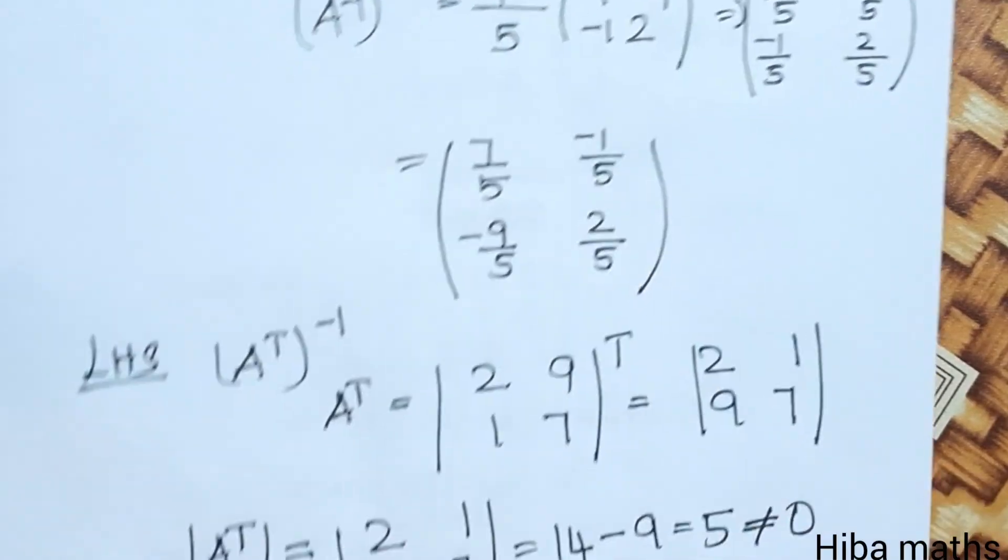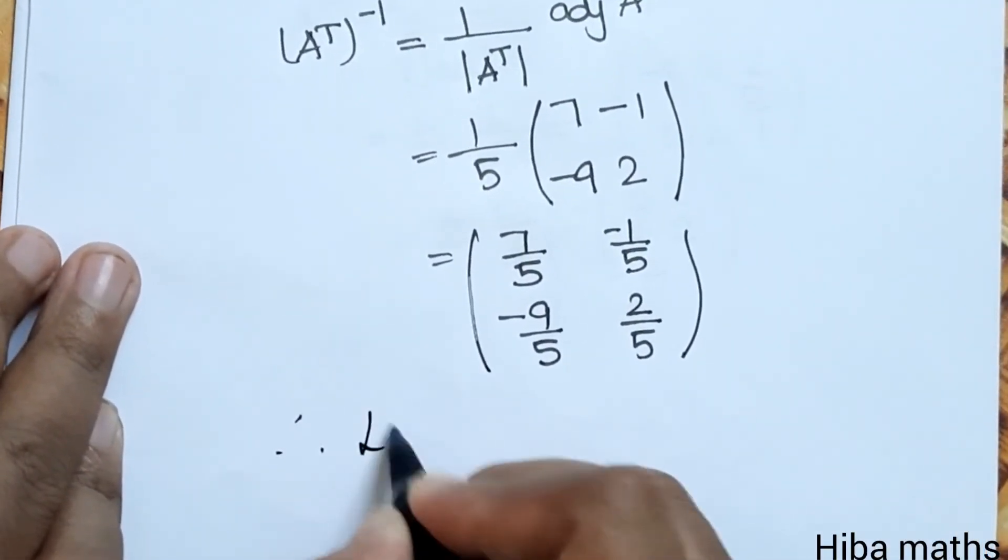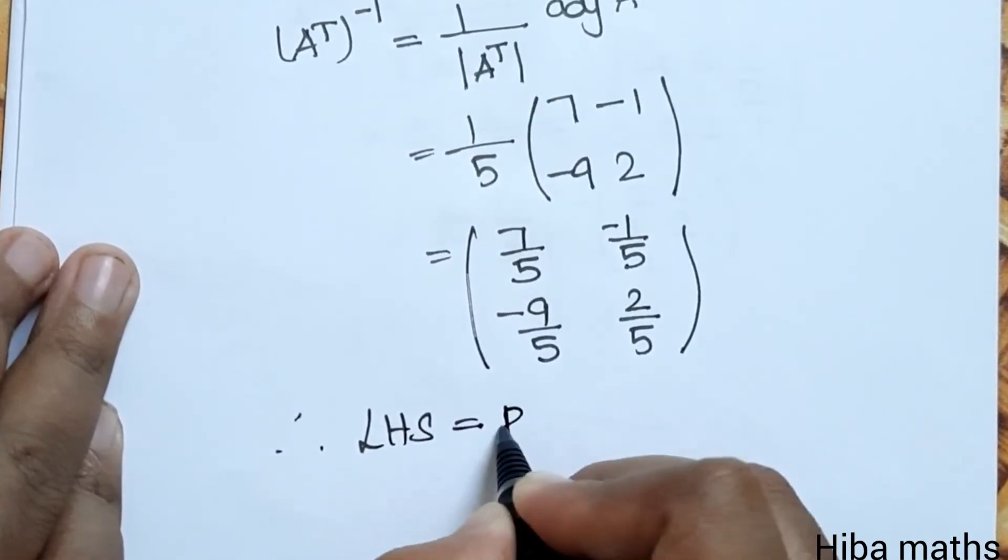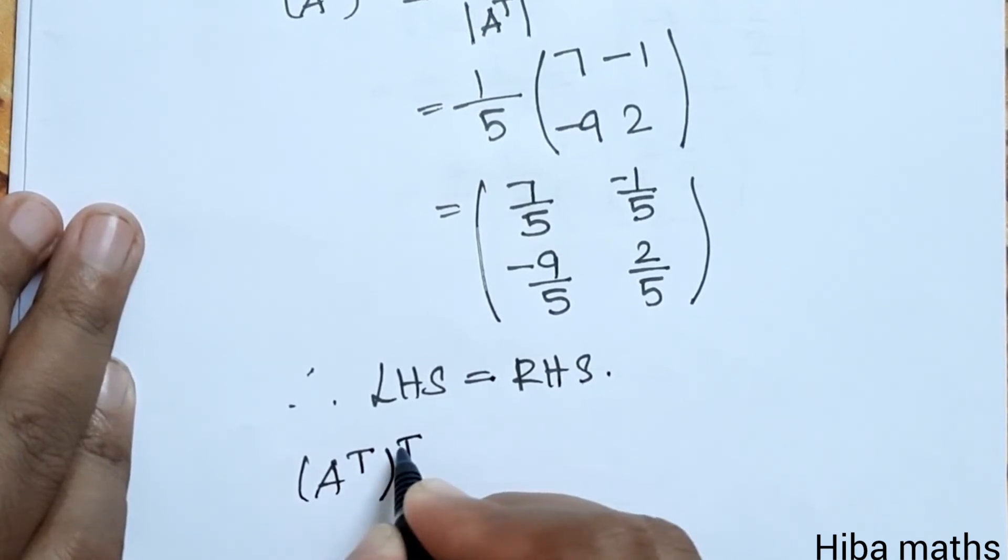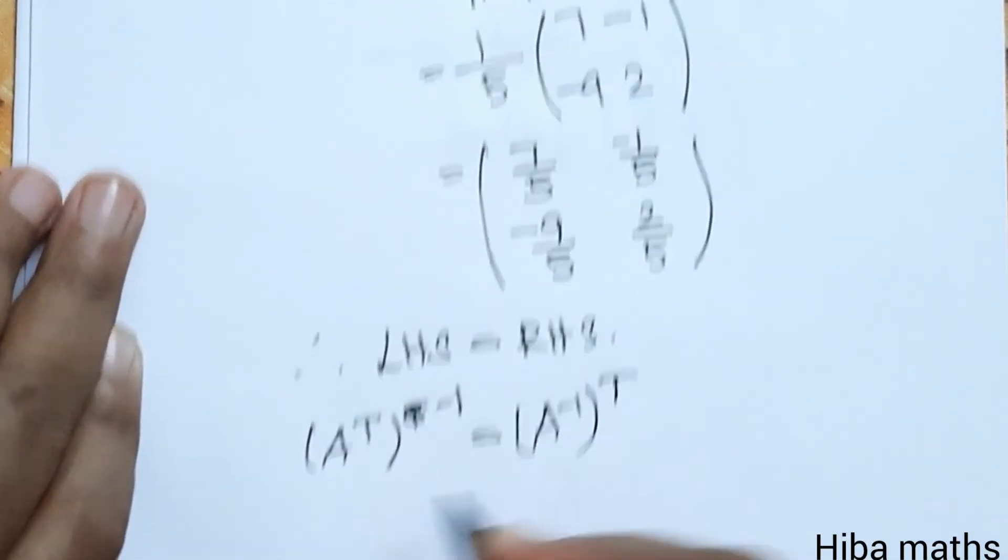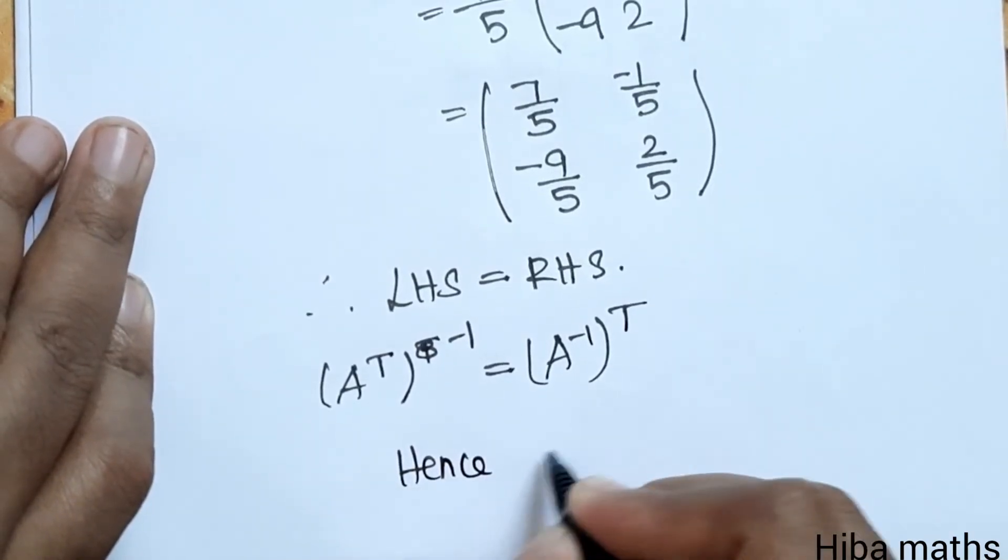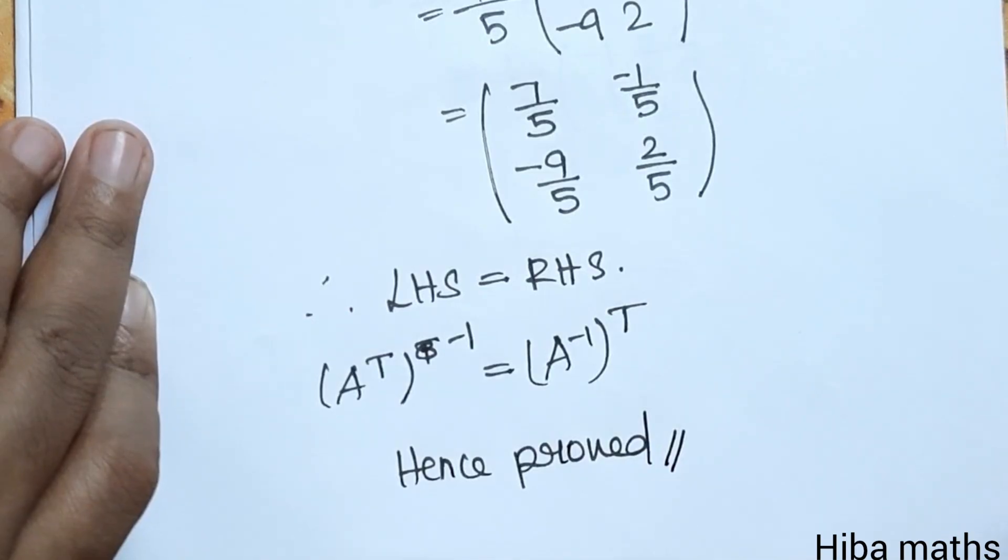Now RHS is equal to LHS. Therefore LHS is equal to RHS. The property A transpose whole inverse is equal to A inverse whole transpose is verified. Thank you so much for watching.